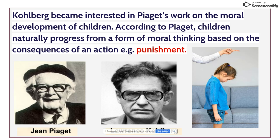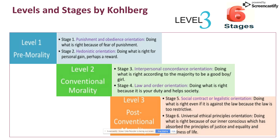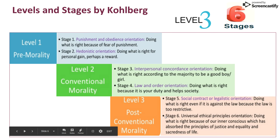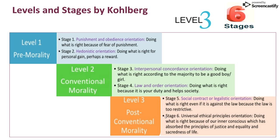Kohlberg became interested in Piaget's work on the moral development of children. According to Piaget, children naturally progressed from a form of moral thinking based on consequences of an action, for example punishment. Kohlberg developed his theory in three levels with six stages: Level 1 is pre-conventional morality containing stages one and two, Level 2 is conventional morality containing stages three and four, and Level 3 is post-conventional morality containing stages five and six.